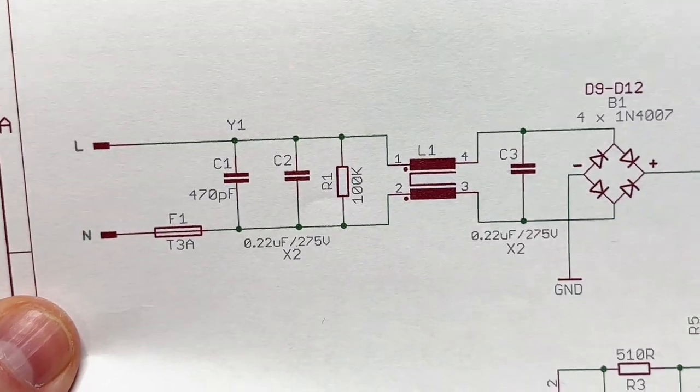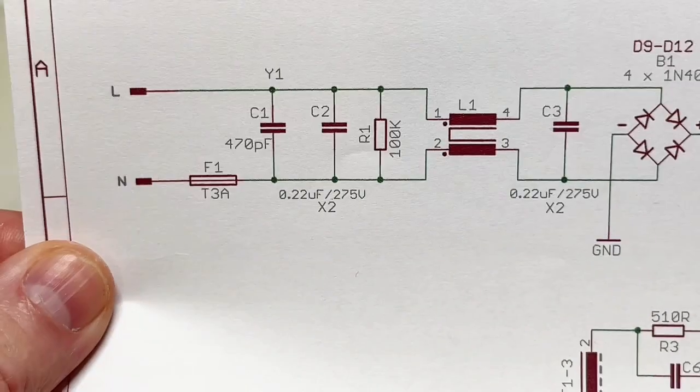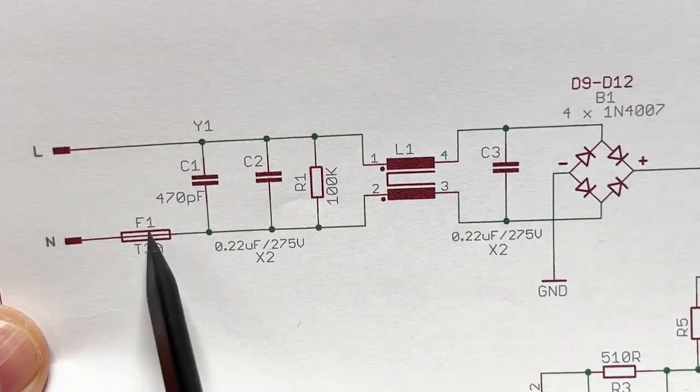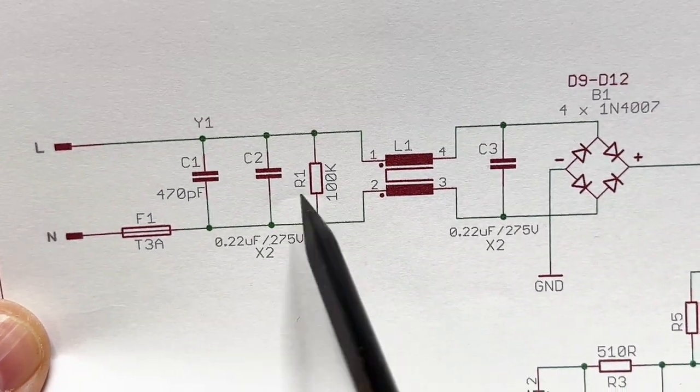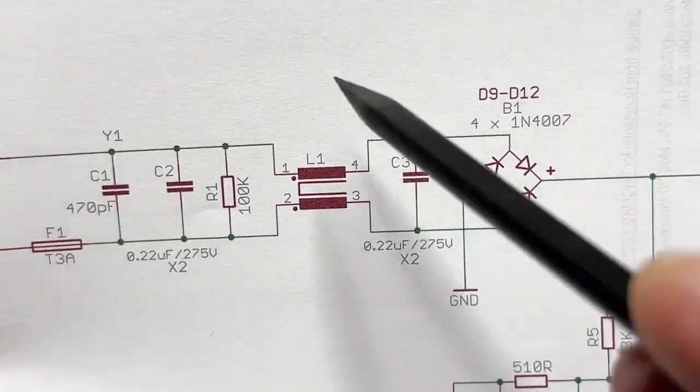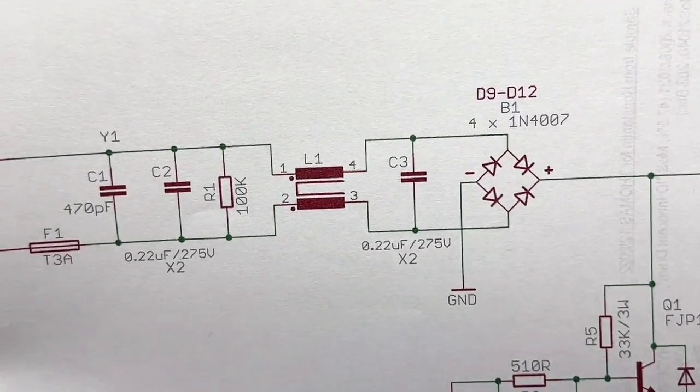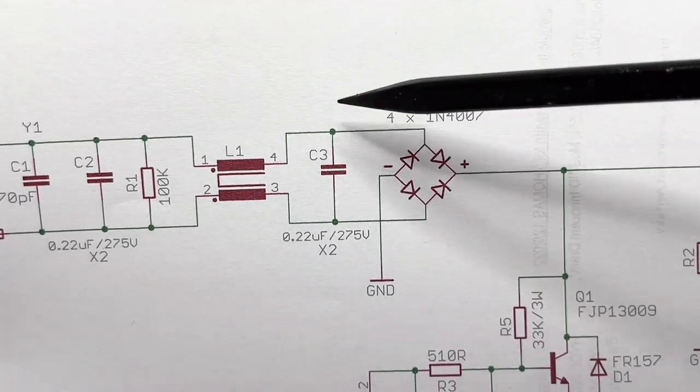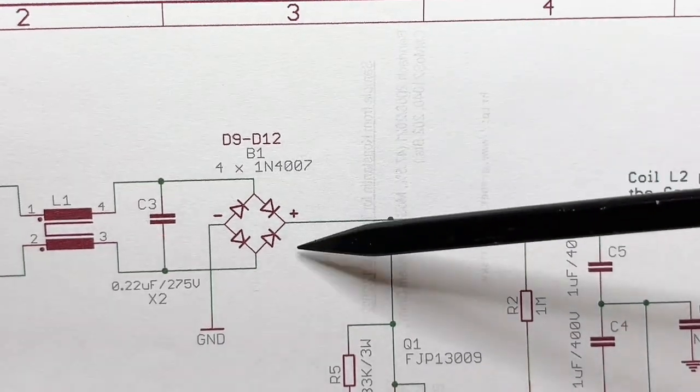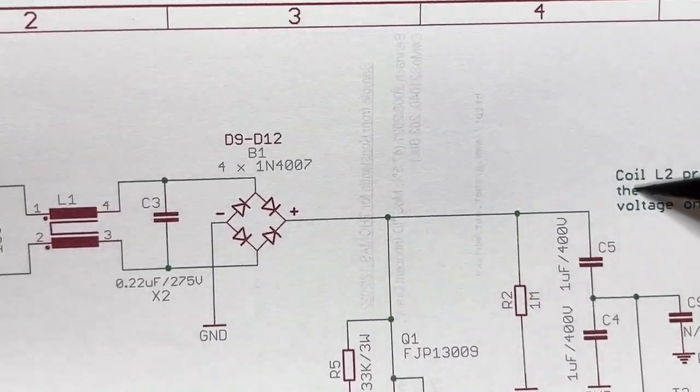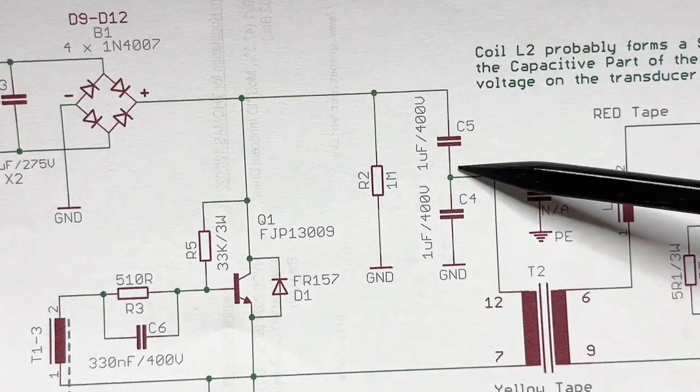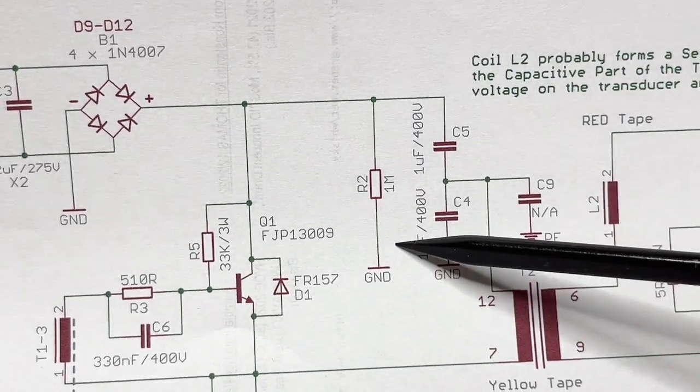Let's start with the schematic from left to right. Three amp slow blow, ceramic capacitor, the X2 capacitors, resistor and the common mode choke as I showed you on the PCB board. The rectification - here you will have the 100 hertz, the positive half of the sine wave.